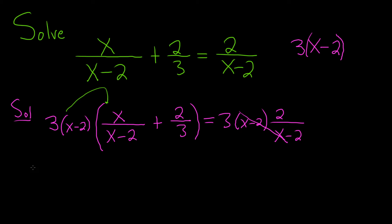So it'll be this times this. I'll just write it again, 3x minus 2. And here we have x over x minus 2 plus, then same thing here, 3x minus 2 times 2 over 3. That was this times this.